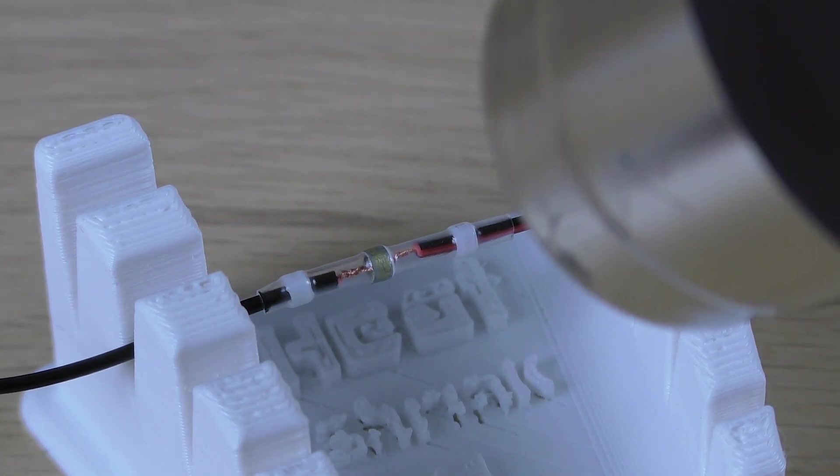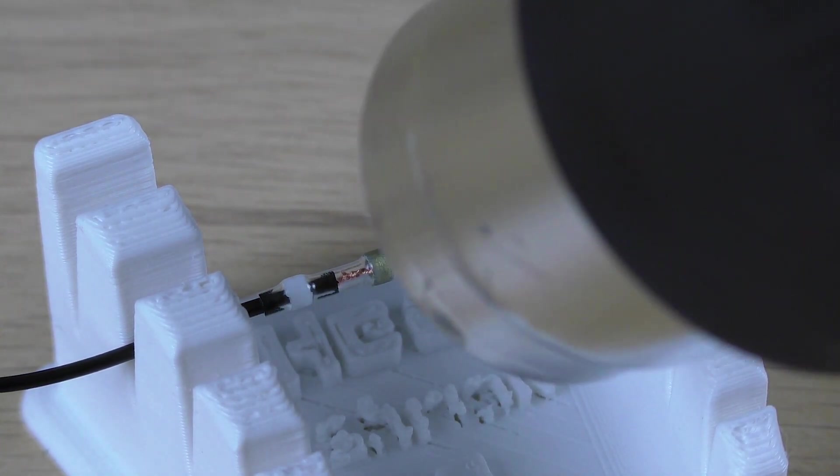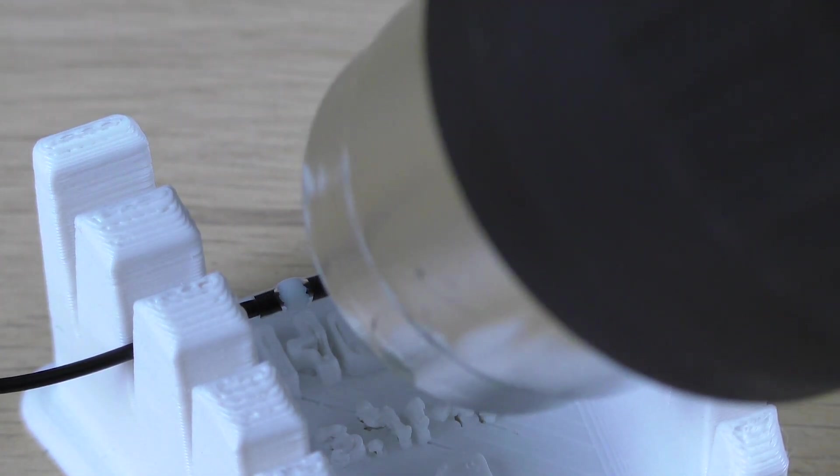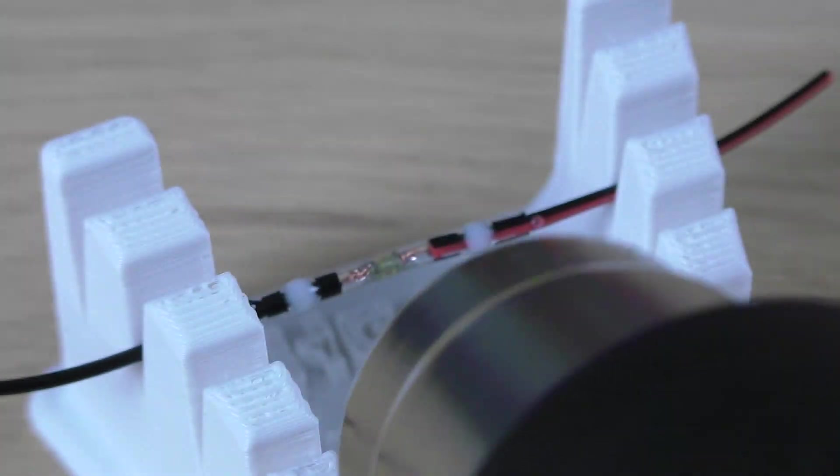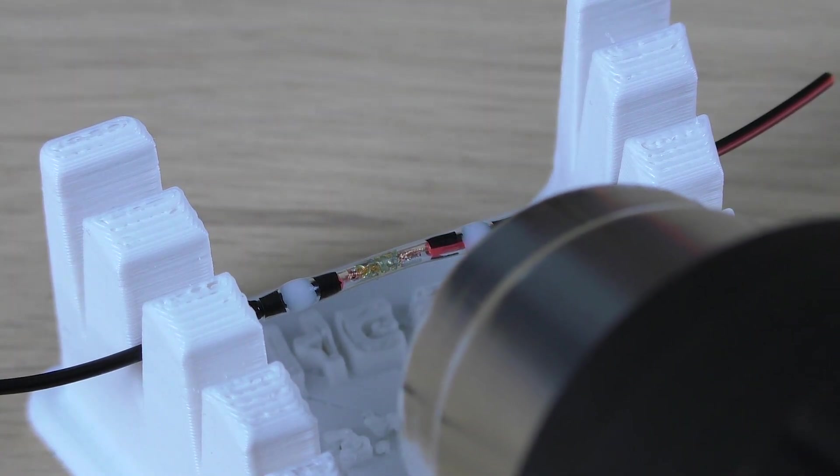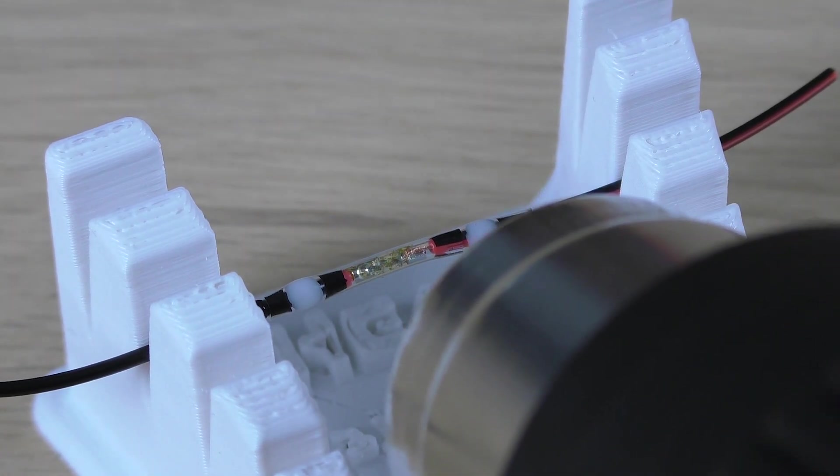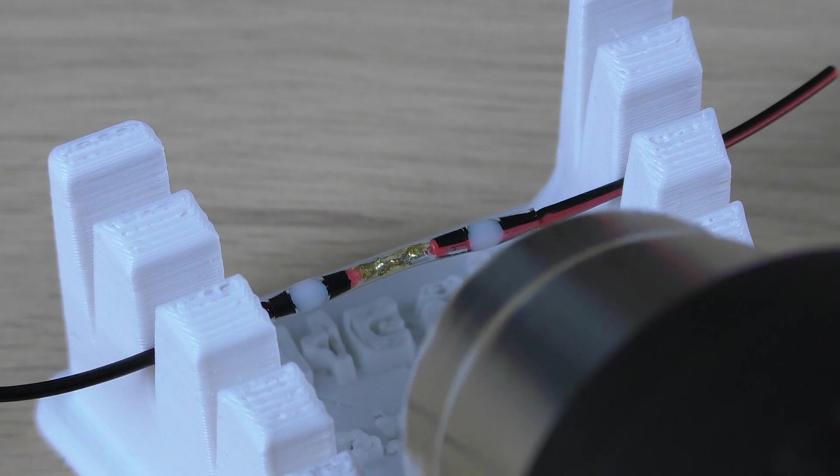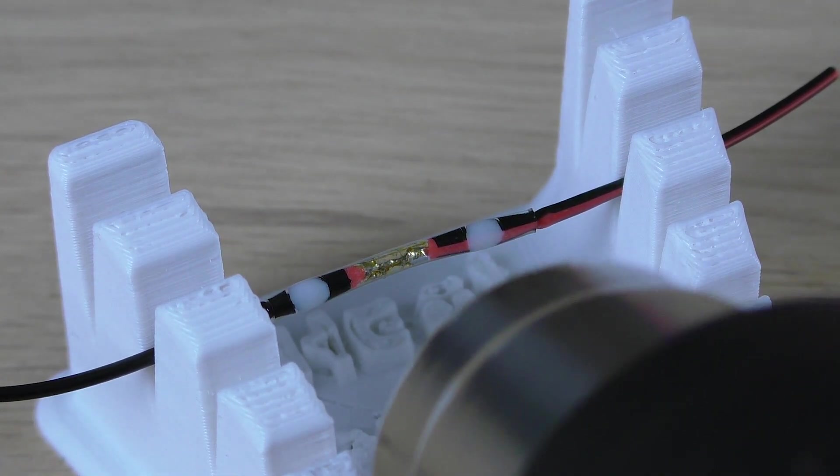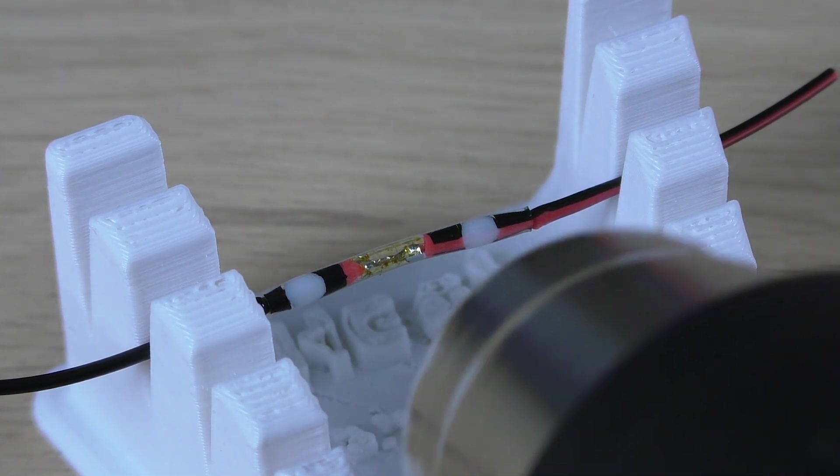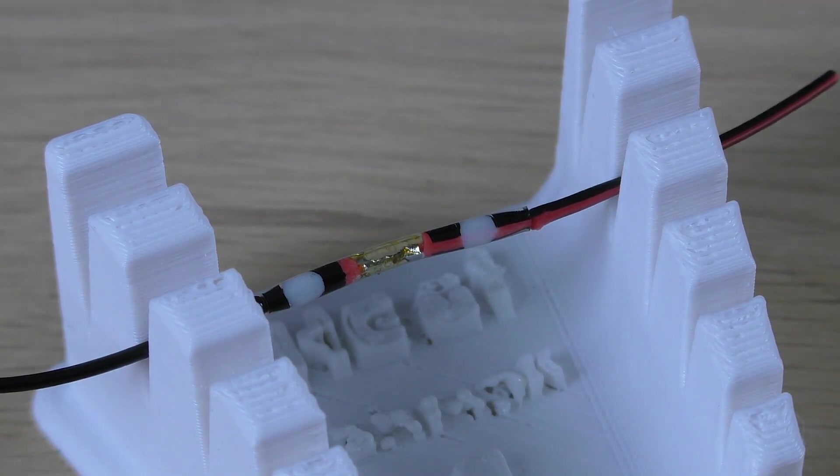The solder in the middle should melt and flow over the wires, and the tube should shrink and hold everything in place. It's an easy and effective solution, but the connectors are a bit more expensive.